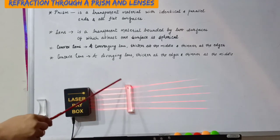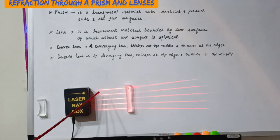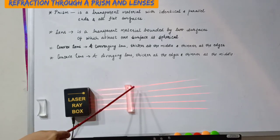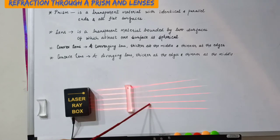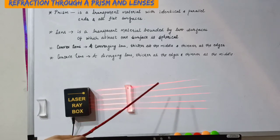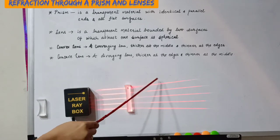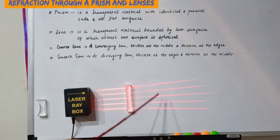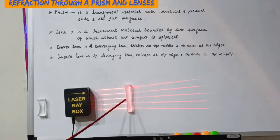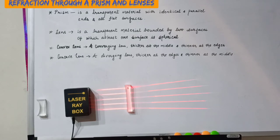This is a biconcave lens. When parallel rays of light fall on a biconcave lens, the rays diverge — that is, the distance between the rays increases. So the concave lens is also called a diverging lens. These rays will never actually meet, but they appear to come from a point, and that point is called the virtual focus.